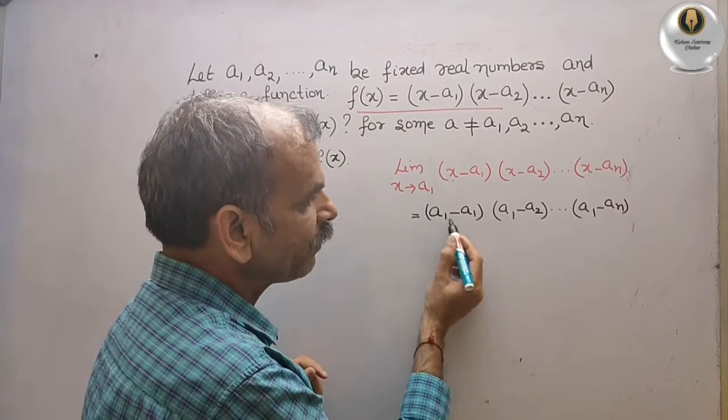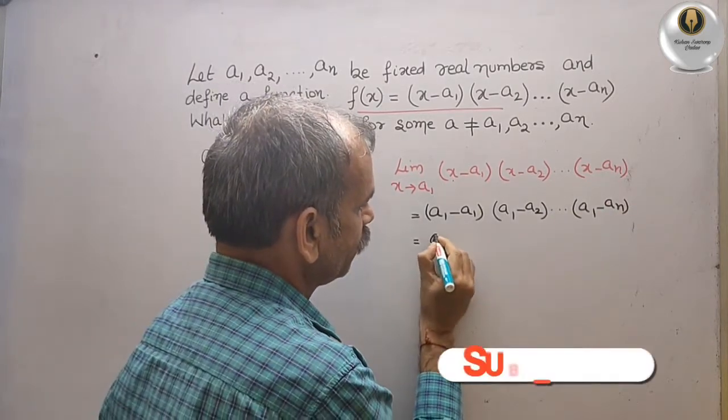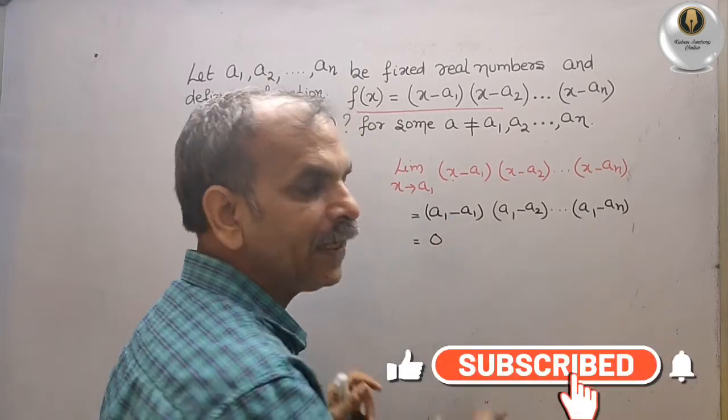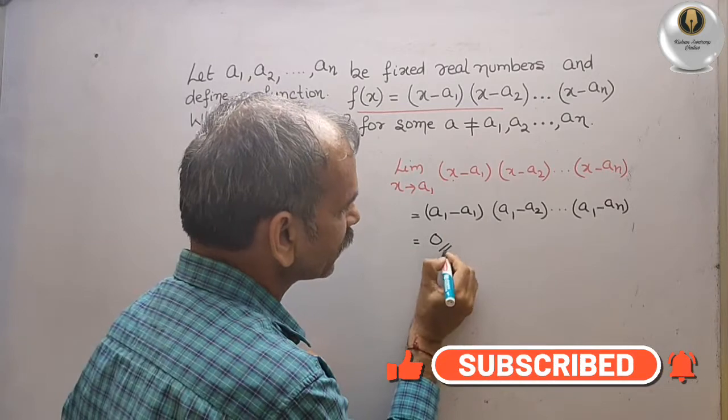Now, we know that a1 minus a1 is 0. Now 0 into any integers or any numbers gives you 0. Therefore, your answer is 0.